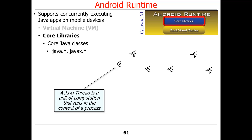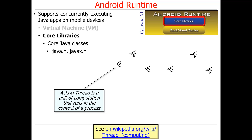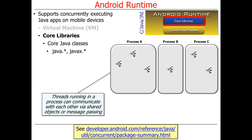A thread in Java is a unit of computation that runs in the context of something called a process. Processes are units of protection and resource allocation, and inside of processes, threads can execute. The threads that run within processes are able to communicate with each other in various ways, and there are a couple of different techniques you can use.